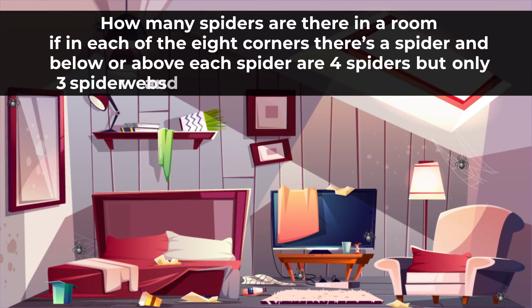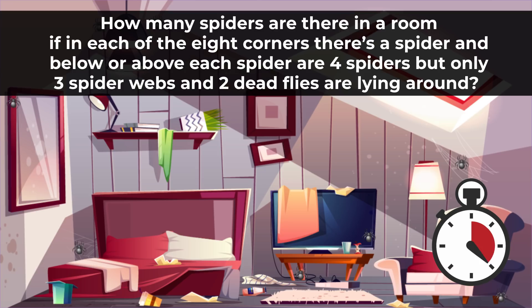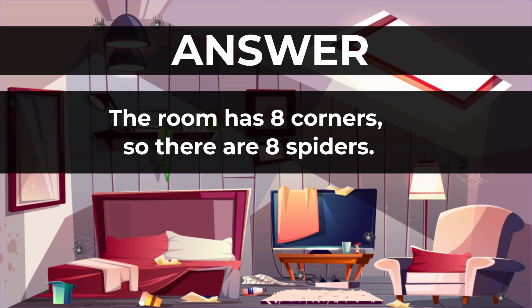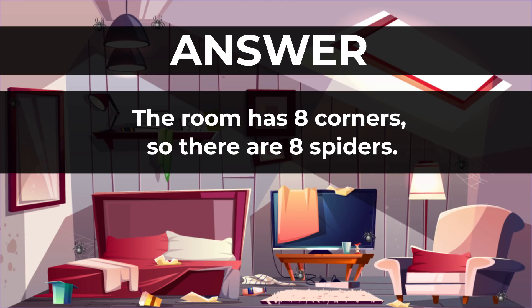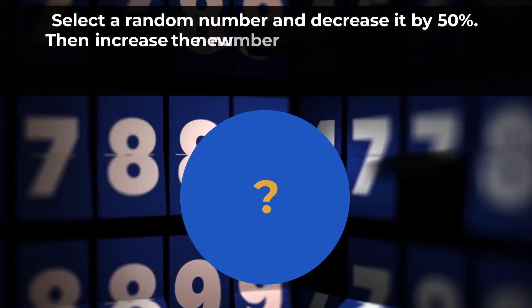How many spiders are there in a room if in each of the eight corners there is a spider, and below or above each spider are four spiders, but only three spider webs and two dead flies are lying around? Can you answer this riddle in 10 seconds? The answer is: the room has eight corners, so there are eight spiders.